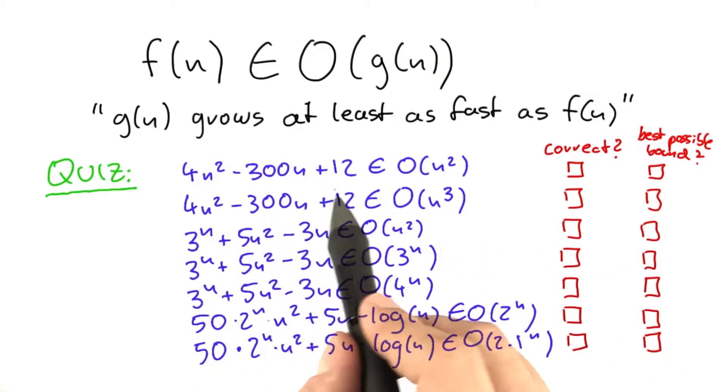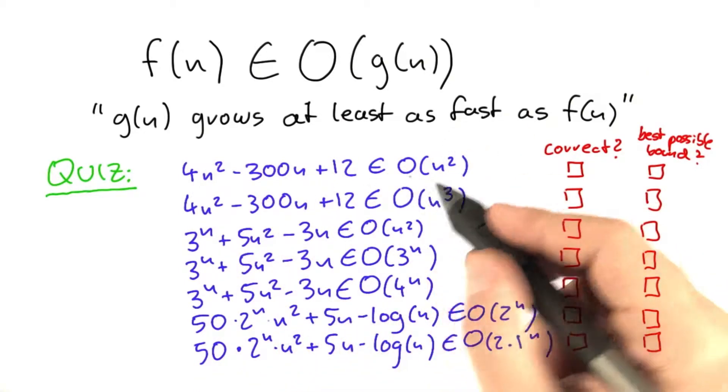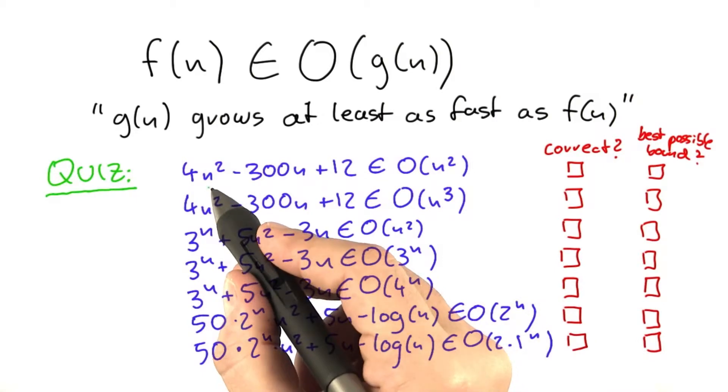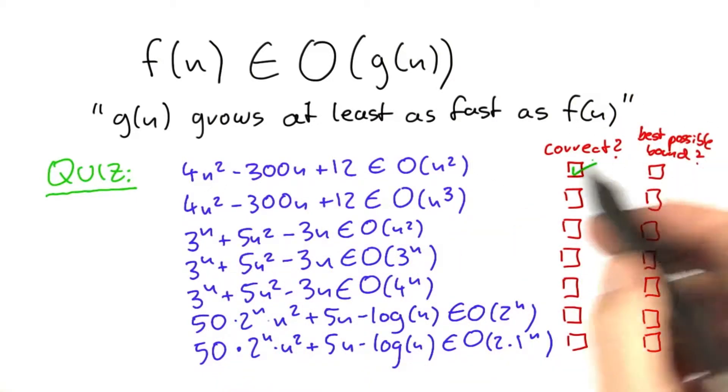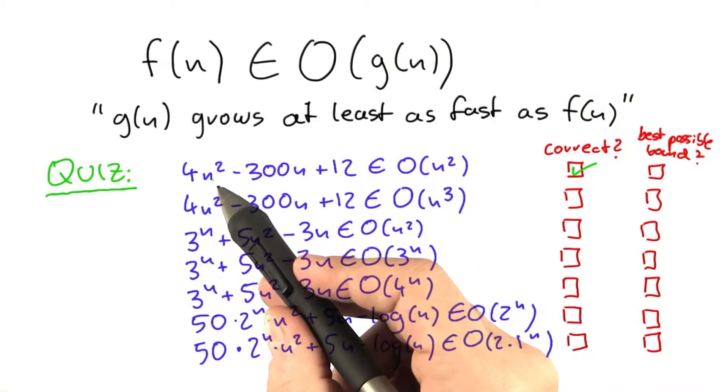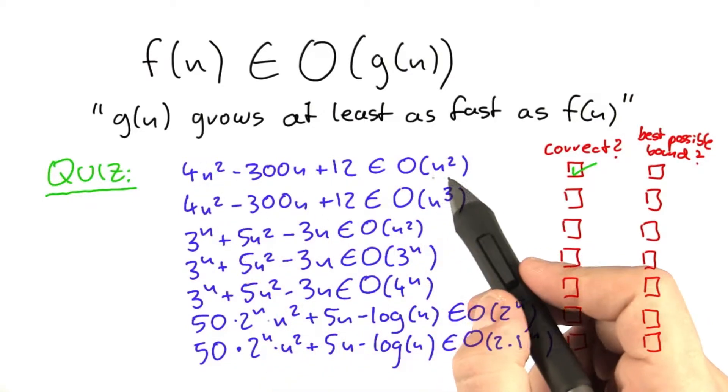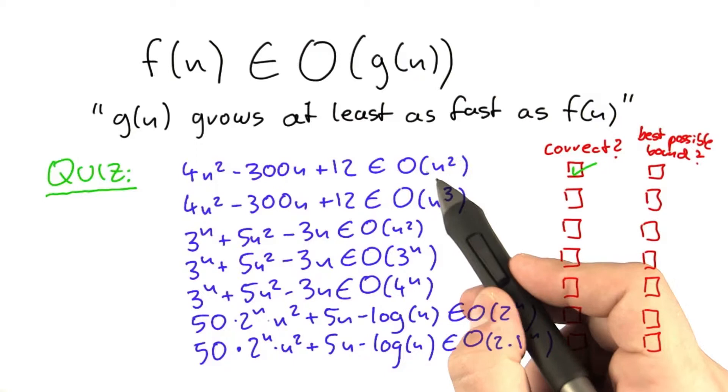So the first one, 4n squared minus 300n plus 12, is contained in O of n squared because n squared is the fastest growing term. So it's correct. And it's also the best possible bound because we have n squared here as the fastest growing term, which is exactly the same that we wrote here.